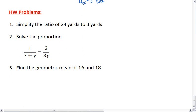Okay. That was our last example. Here are your homework problems. I want you to simplify the ratio of 24 yards to 3 yards to the simplest fraction. Solve the following proportion of 1 over 7 plus y equals 2 over 3y. And then find the geometric mean of 16 and 18. Make sure you round this number to at least 3 decimal places.